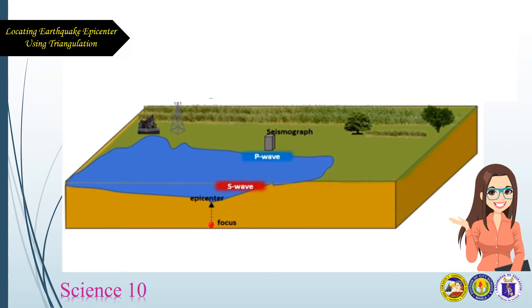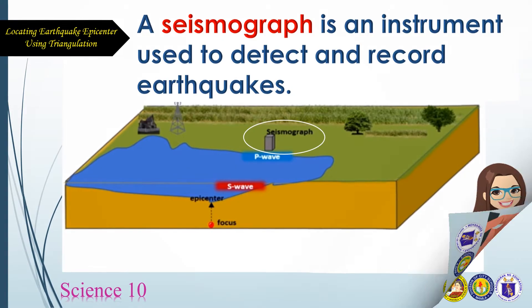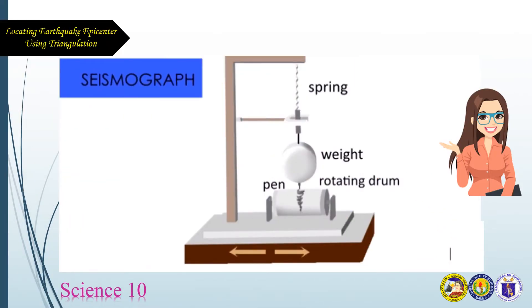Now, let us know what a seismograph is. A seismograph is an instrument used to detect and record earthquakes. Generally, it consists of a mass attached to a fixed base. During an earthquake, the base moves and the mass does not. The motion of the base with respect to the mass is commonly transformed into an electrical voltage.